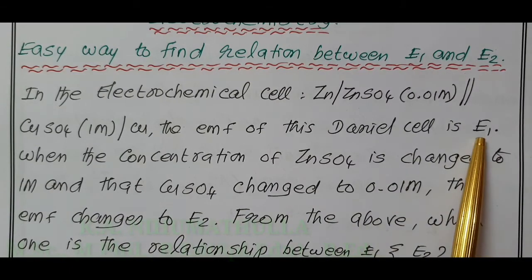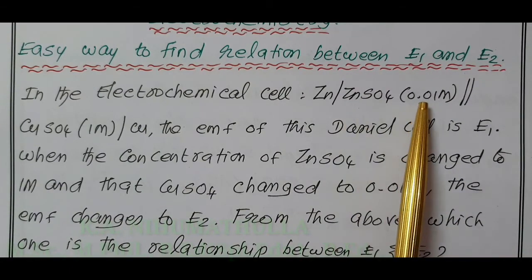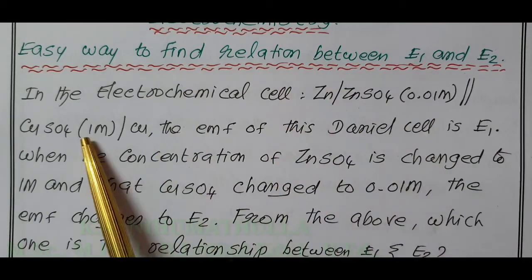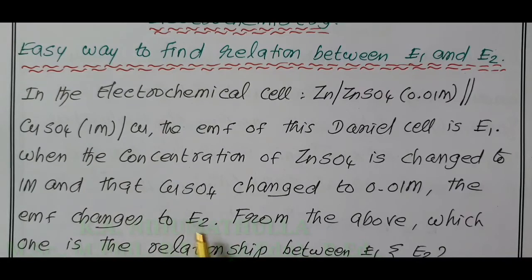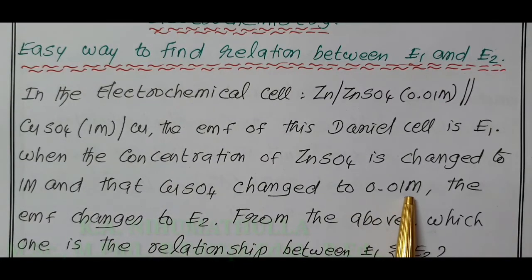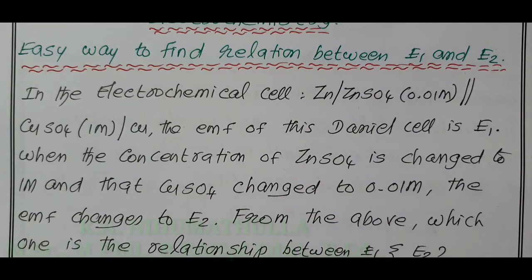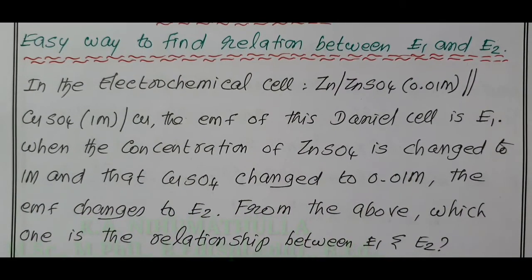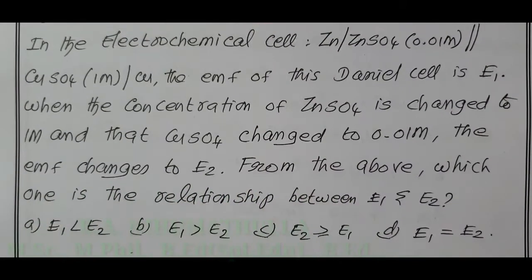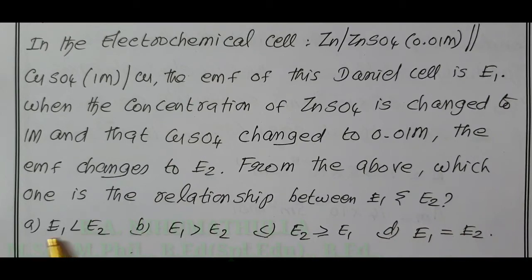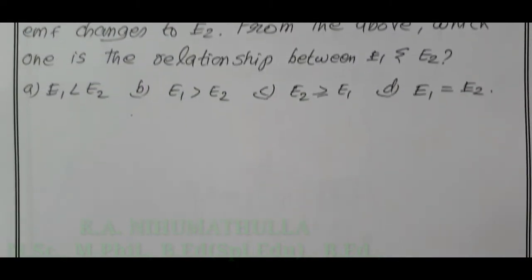For E1, the Zn²⁺ ion concentration is 0.01M and copper sulfate concentration is equal to 1M. For E2, the Cu²⁺ ion concentration is 0.01M and zinc sulfate concentration becomes 1M. From the above, which one is the relationship between E1 and E2? Four options A, B, C, D are given.